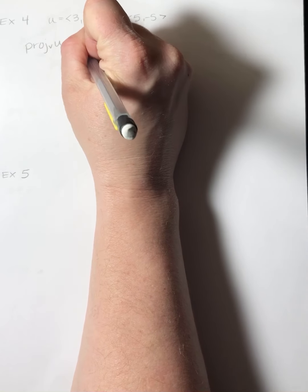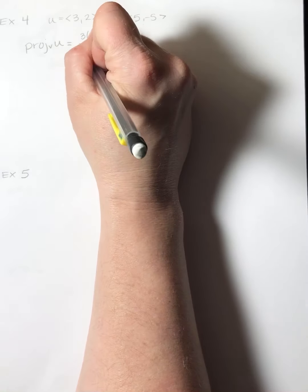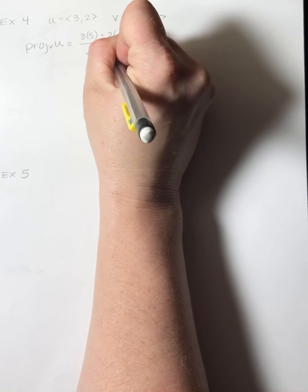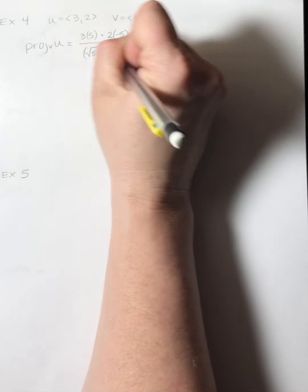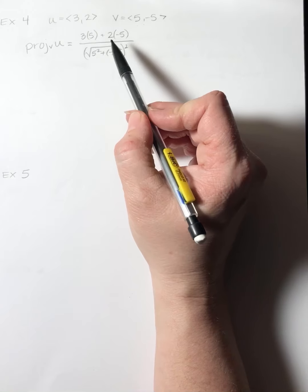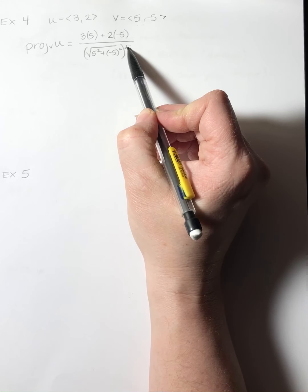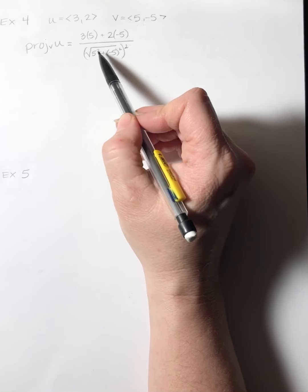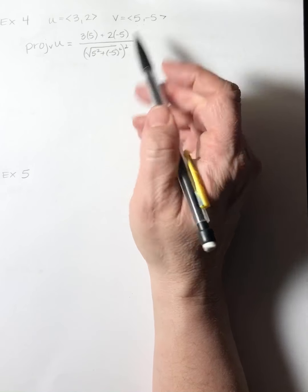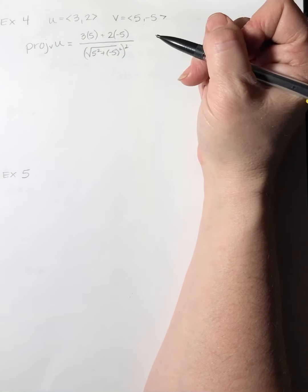The bottom is the square root of 5 squared plus negative 5 squared, but then squared. The nice thing is the square root and the squaring always cancel, so we end up with 25 plus 25, which is 50.